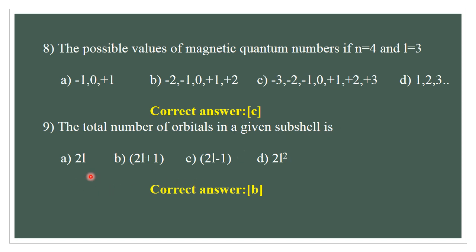The total number of orbitals in a given subcell is given by: A) 2L, B) 2L+1, C) 2L-1, D) 2L squared. The correct answer is B — 2L+1. For example, L = 2 (D orbital): 2×2+1 = 5 subcells are possible.